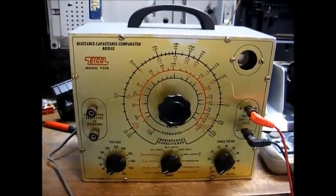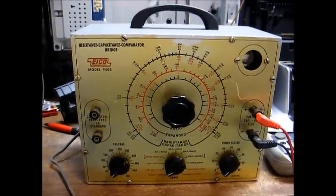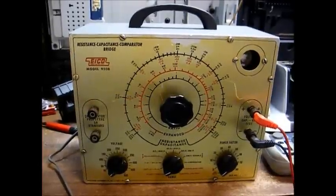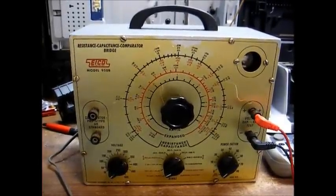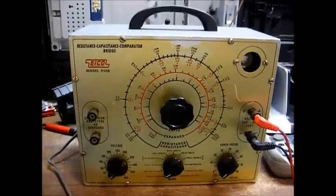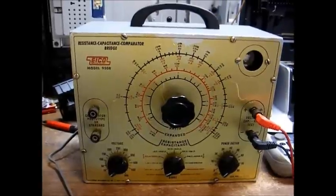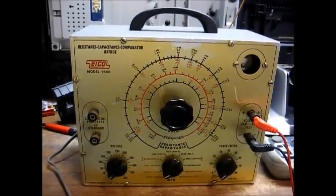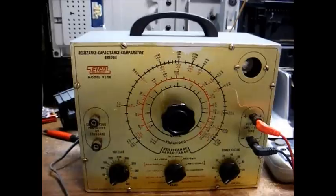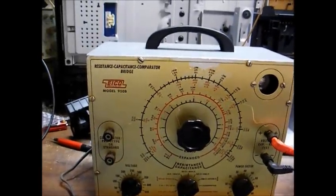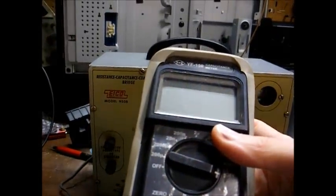The nice thing about these older capacitor testers is they will test a capacitor at higher voltages. In tube type electronics, it's not uncommon to find capacitors rated at 400 to 600 working volts. And this tester will provide up to 500 volts to test those capacitors. When checking a capacitor with a modern capacitor meter such as this,